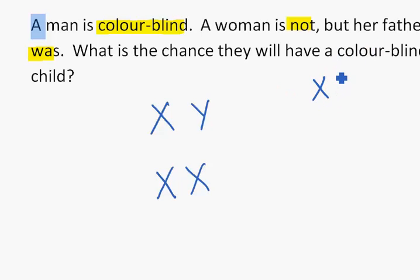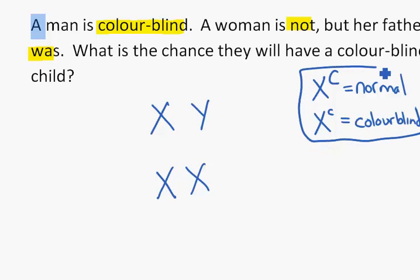So we can say X big C equals normal vision, while X small c is colorblind. Now that we have a key we can start to fill this in.